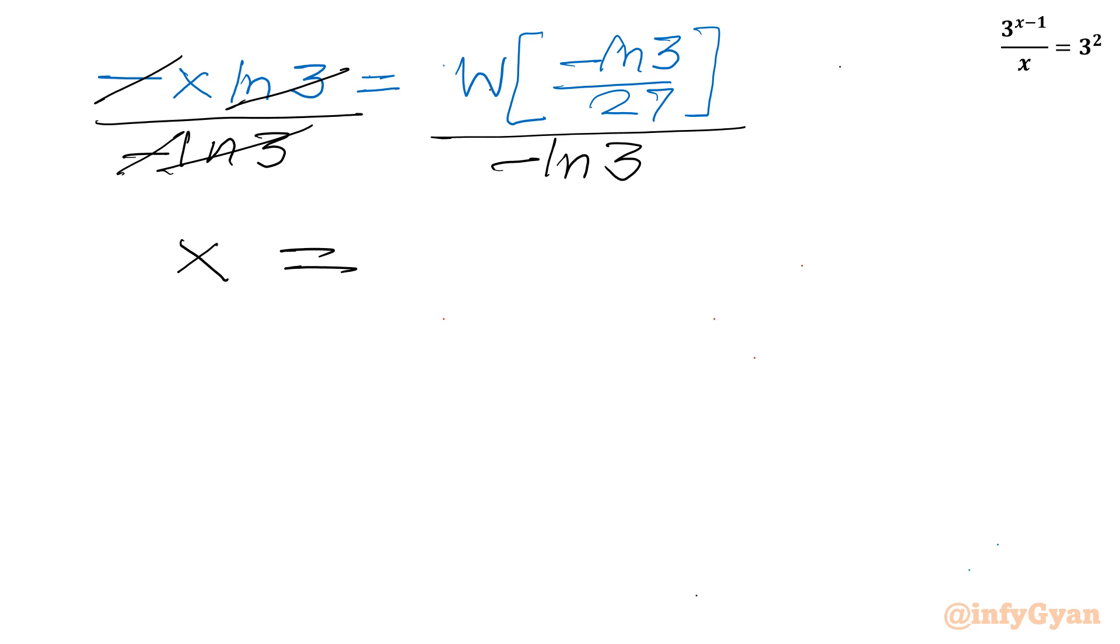In the right hand side it is minus 1 over ln 3 times Lambert W function of minus ln 3 divided by 27.